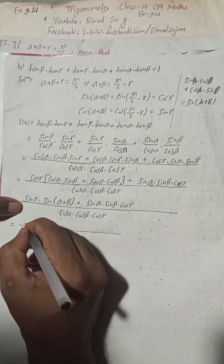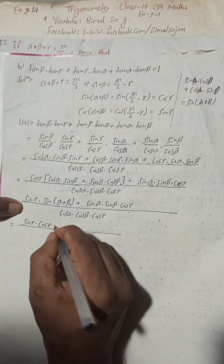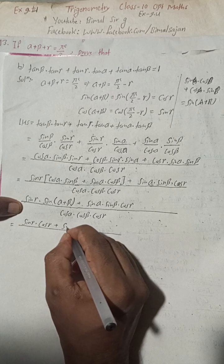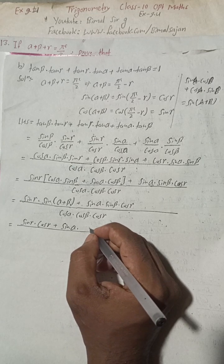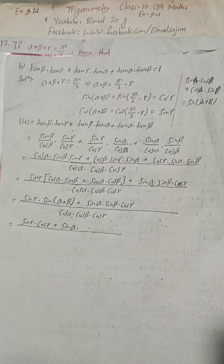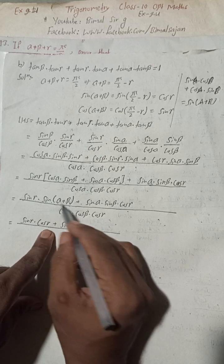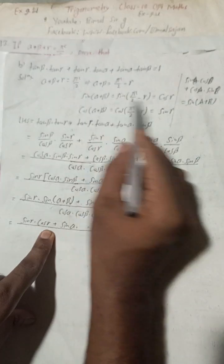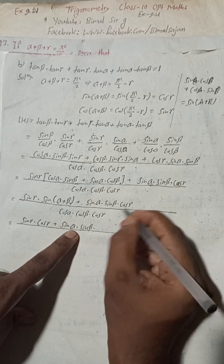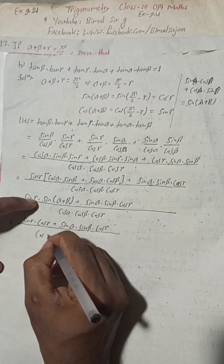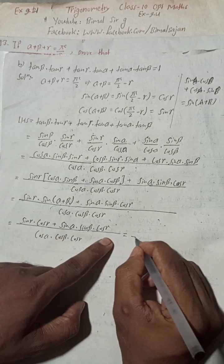So we get sin gamma times sin(alpha plus beta) in the numerator. But sin(alpha plus beta) equals cos gamma, from our earlier result. So this becomes sin gamma times cos gamma, plus sin alpha sin beta cos gamma in the numerator, all over cos alpha cos beta cos gamma.